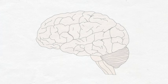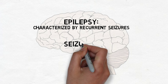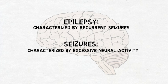Epilepsy is a chronic condition that is characterized by recurrent seizures. Seizures are temporary disruptions of normal brain activity caused by excessive neural activity. Epilepsy can have genetic and acquired causes, but in most cases the cause is not known.